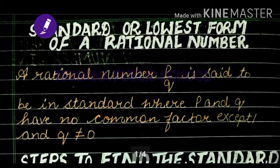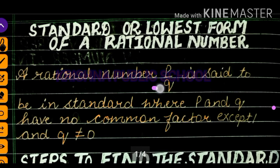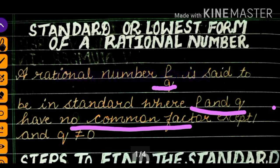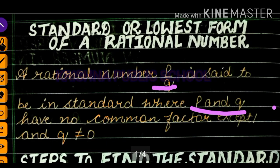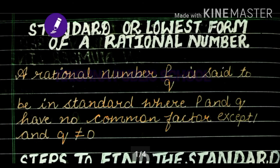A rational number P/Q is said to be in standard form where P and Q have no common factor except 1, and Q is not equal to 0. This means the numerator and denominator have no common factor, and Q should be greater than 0.